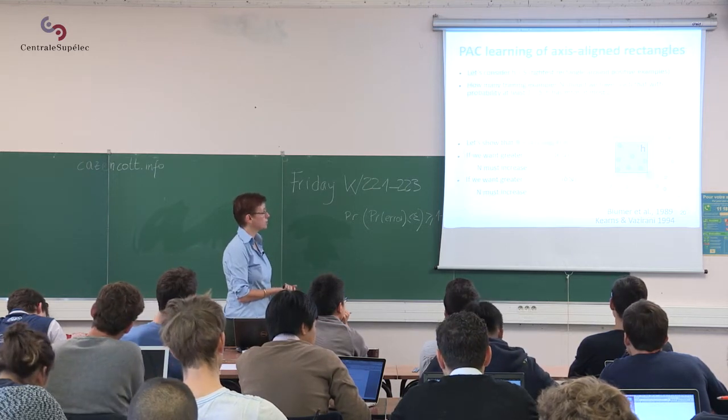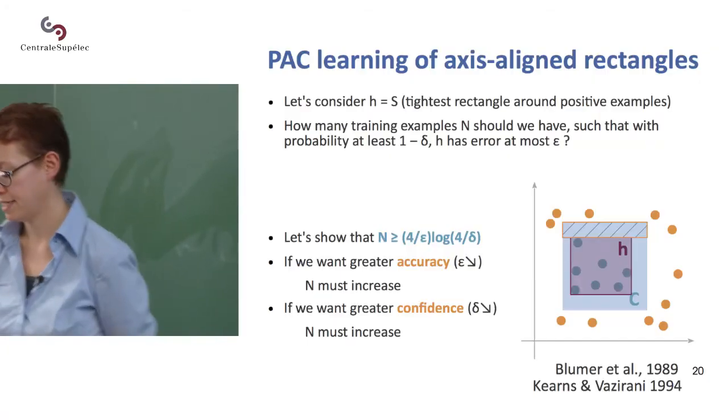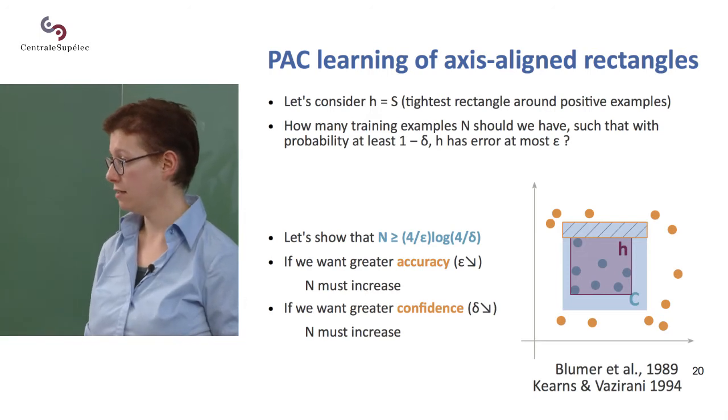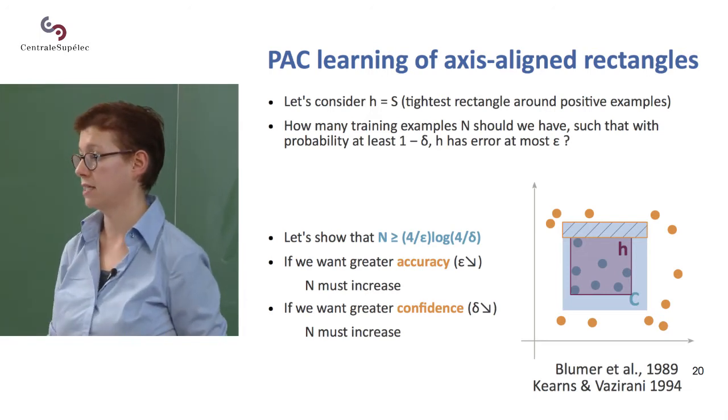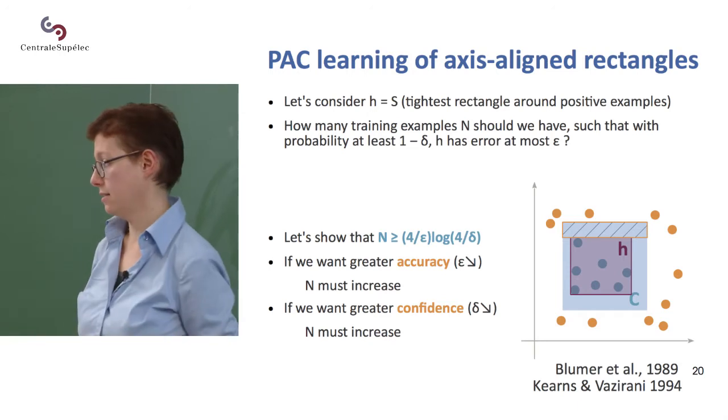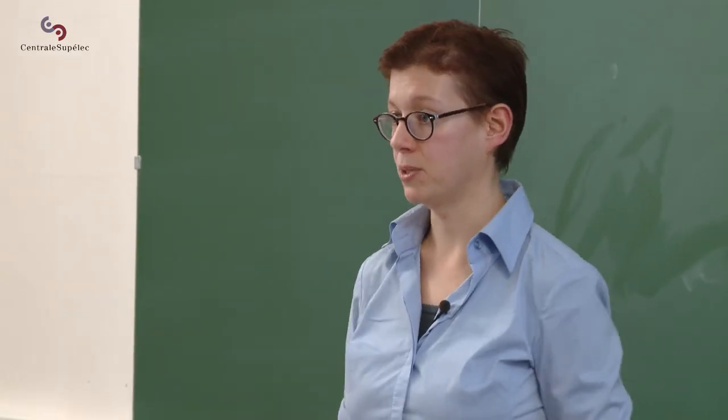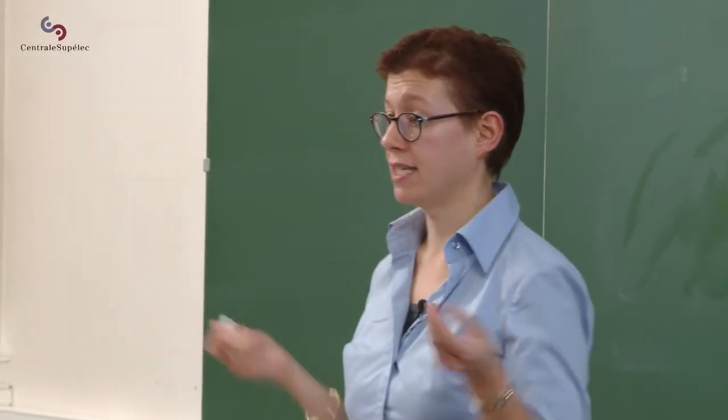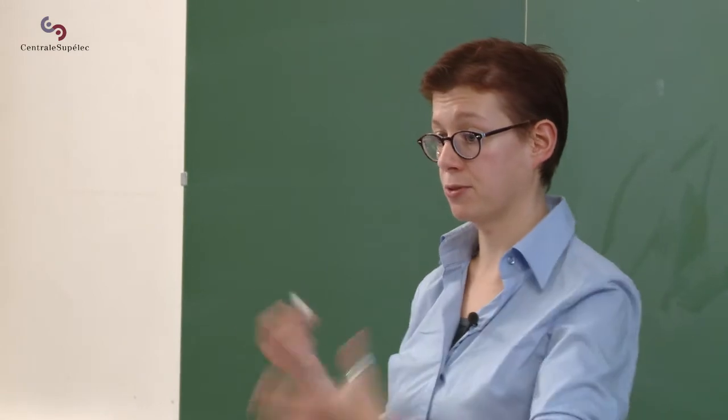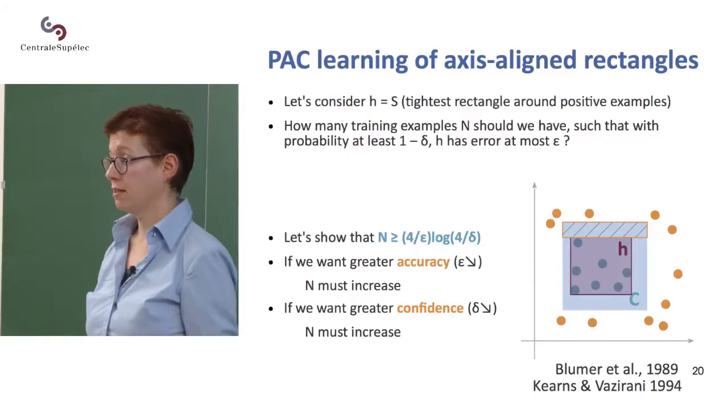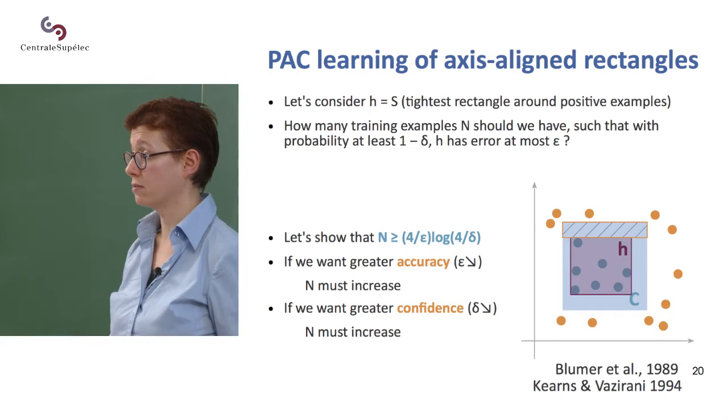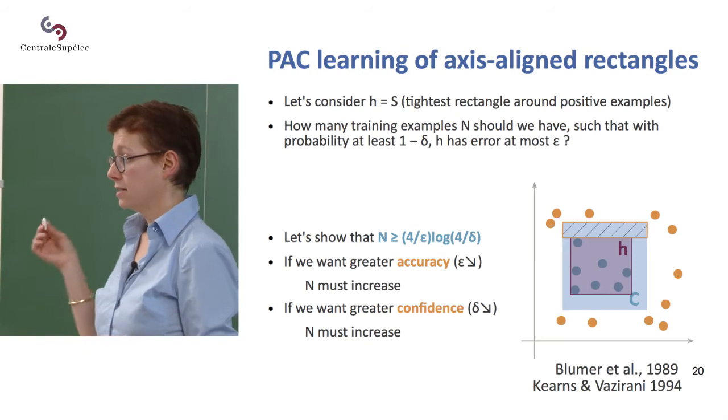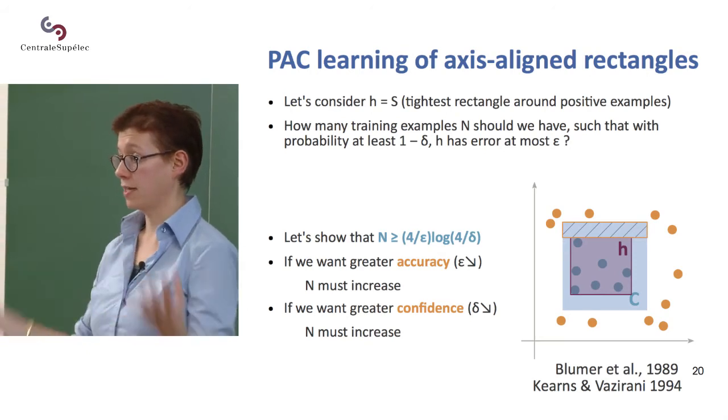Okay, so in practice, what does this mean? I'll try to walk you through an example, still considering axis-aligned rectangles to show you the kind of things that are being done in theoretical machine learning. And to understand how it is that we can sometimes for some classes of problems get guarantees about the number of examples that we should have to be able to learn given a certain hypothesis space.